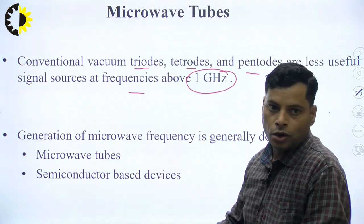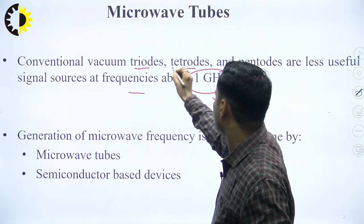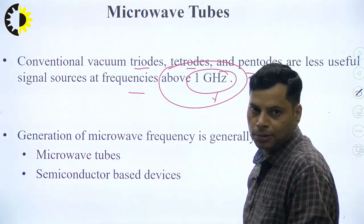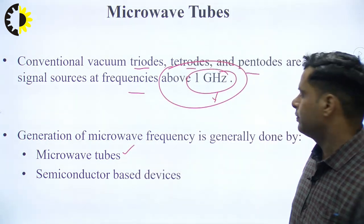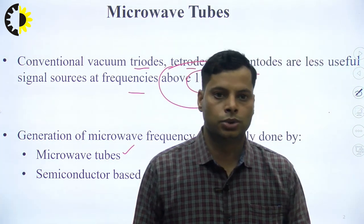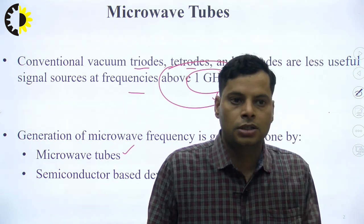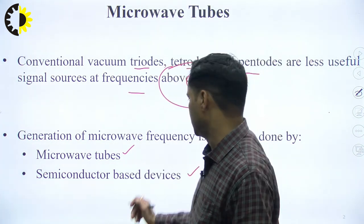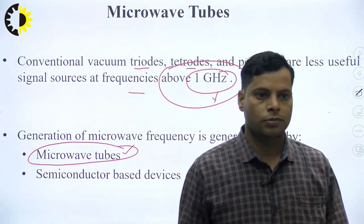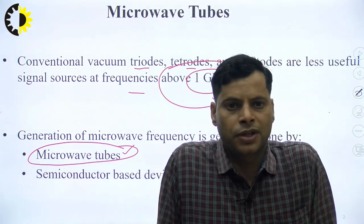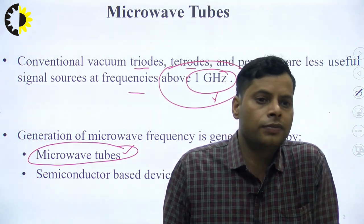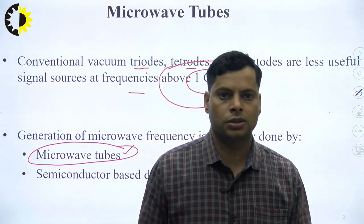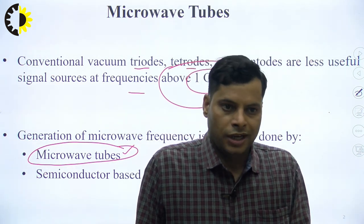For the generation of microwave frequencies — above 1 GHz — we need a source. For microwave frequency generation, the applicable sources are microwave tubes as well as semiconductor-based devices. These two are the sources available to generate the microwave signal. In our curriculum for code KEC 074 Microwave and Radar Engineering, as per syllabus we are only covering the microwave tubes portion. Previously the syllabus also included semiconductor-based devices, but right now only the microwave tubes are part of our syllabus.